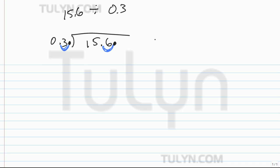So let's copy that over again. That'll be 0.3 into 15.6. See how there is an imaginary decimal here and here, but I don't have to write it. So now we can just rewrite that and just divide it like this.